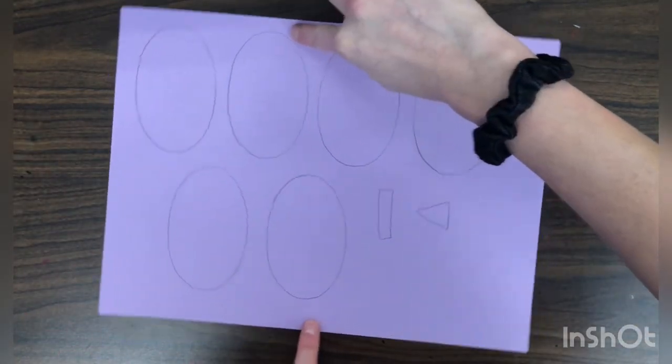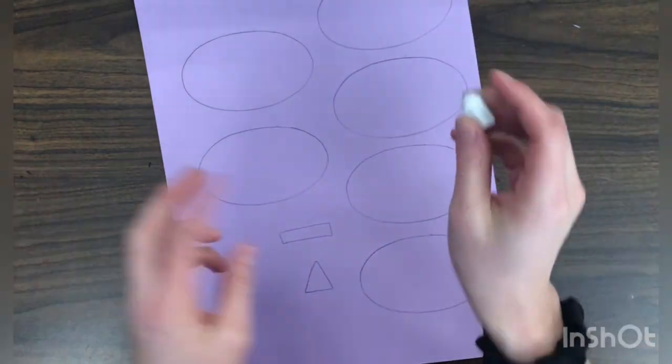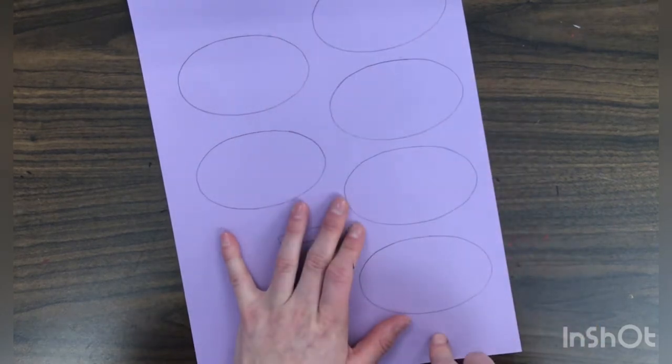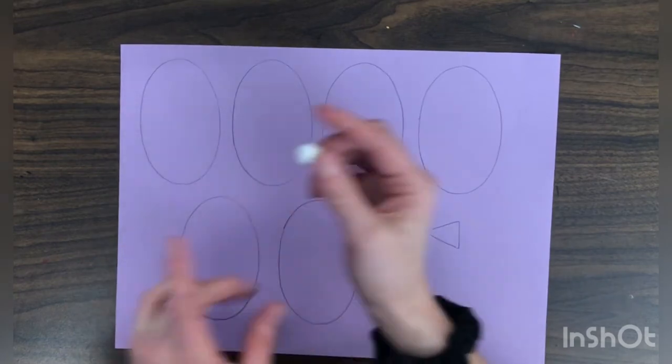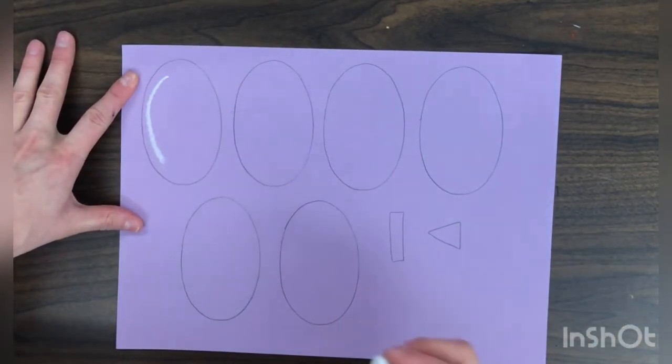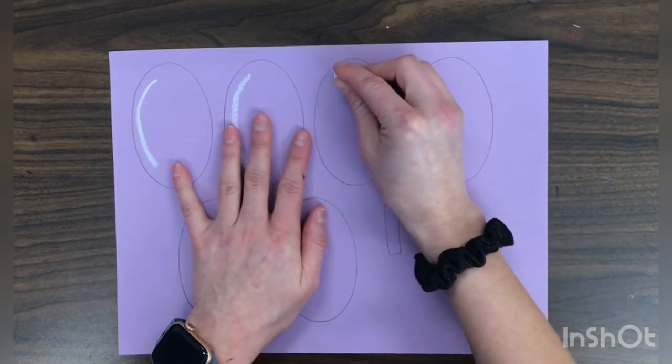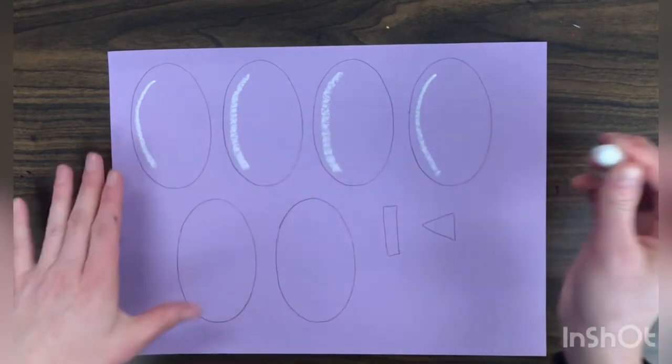And so I'm going to turn my paper and I'm going to add a white highlight on the top of each of my ovals. Or I can keep it this way and make it on the left side. So left for the L. So I'm going to follow the inside and give a highlight on the left of each of my ovals with the white.